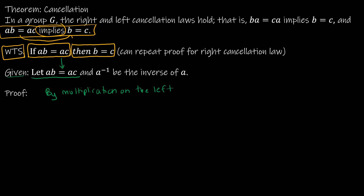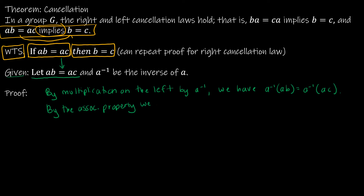When we multiply, we have to multiply both sides on the left by A inverse. So we have A inverse times AB equals A inverse times AC. I've multiplied on the left by A inverse. By the associative property, we can regroup: A inverse AB equals A inverse AC.